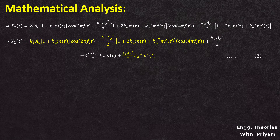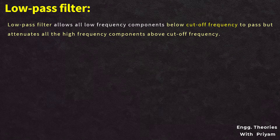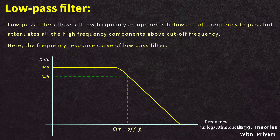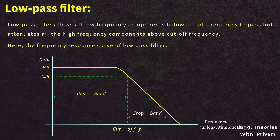The output X2(T) of the square law device is then passed through a low-pass filter. The low-pass filter allows all low-frequency components below the cutoff frequency to pass but attenuates all high-frequency components above the cutoff frequency. The pass band is the frequency range where the filter allows the signal to pass, and the stop band is the frequency range where the filter attenuates the signal.